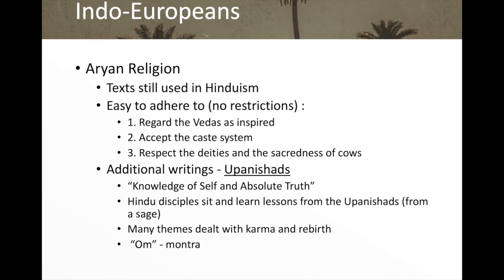There are additional writings called the Upanishads, dealing with knowledge of self and absolute truth. Hindu disciples sit and learn lessons from the Upanishads from a sage — a wise man knowledgeable in these writings. Many themes deal with karma and rebirth. They enter into meditation, chanting the word 'om' as a mantra, seeking to find oneself and absolute truth.